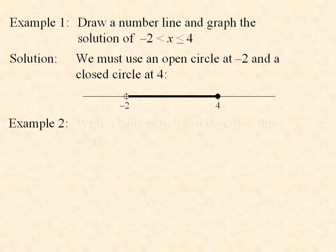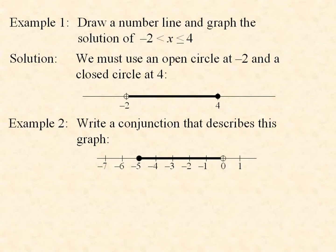Example 2. Write a conjunction that describes this graph. Here we have x between -5 and 0, but it can include -5, but not 0.